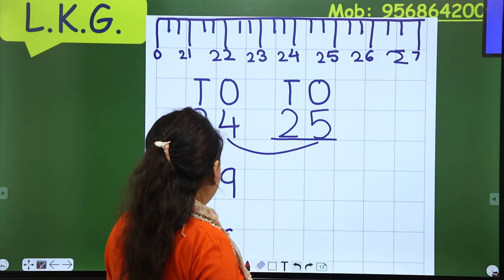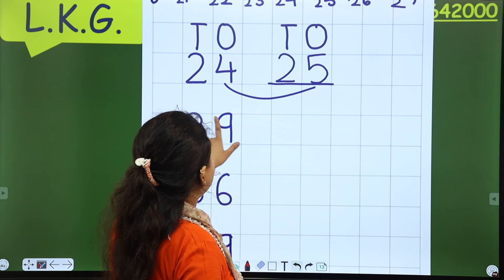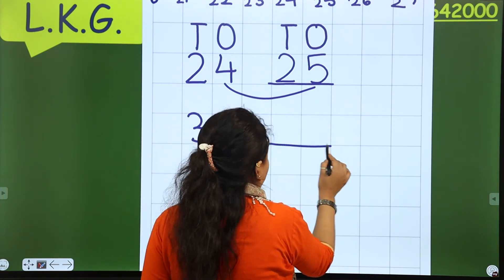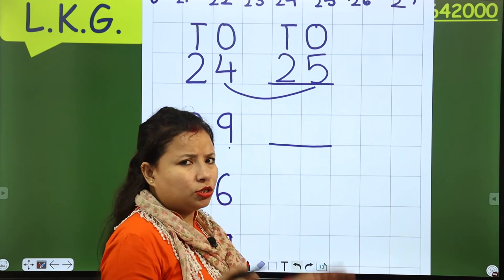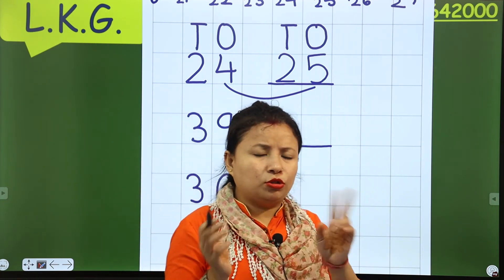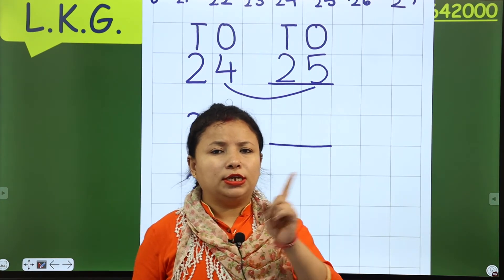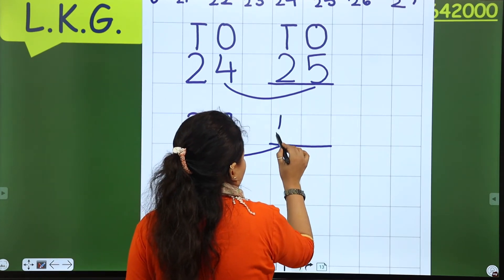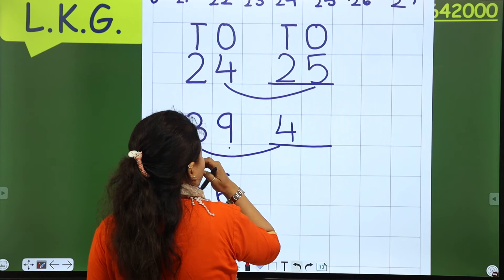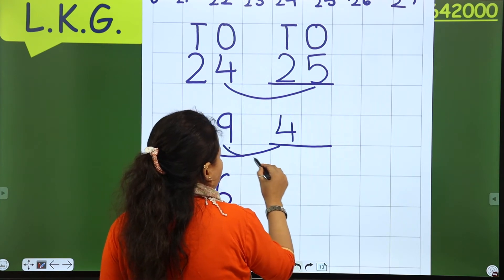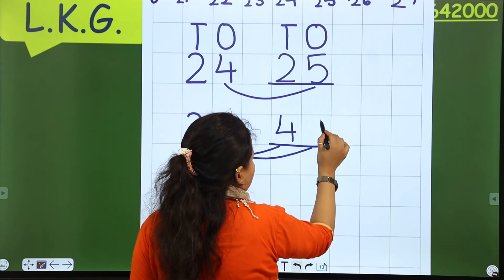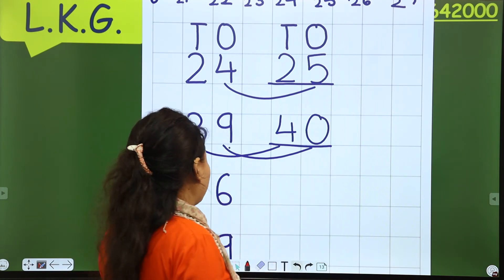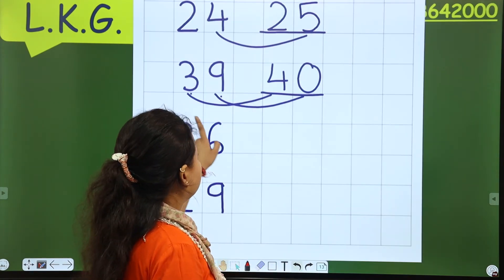Next is thirty-nine. After thirty-nine, nine is there — it means both numbers will change. So thirty-nine: after three comes four, and after nine comes zero. That is forty. Next is thirty-six: after six comes seven, so thirty-seven.